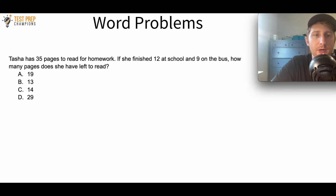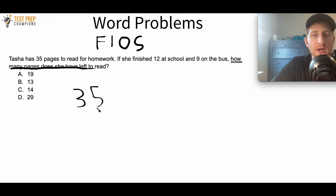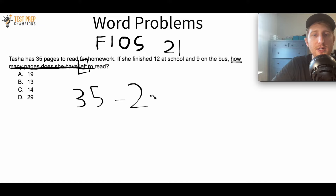Here's a basic word problem: Tasha has 35 pages to read for homework. She finished 12 at school and 9 on the bus. How many pages does she have left to read? The last sentence tells us what to find. She's already read 12 plus 9 equals 21 pages. The word 'left' is a keyword for subtraction, so we do 35 minus 21 equals 14. The correct answer is C, 14.